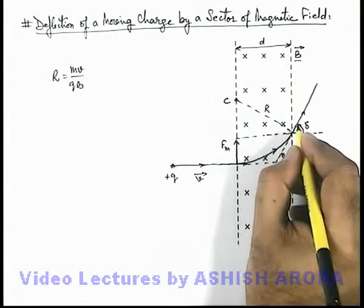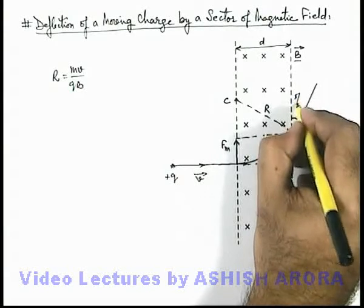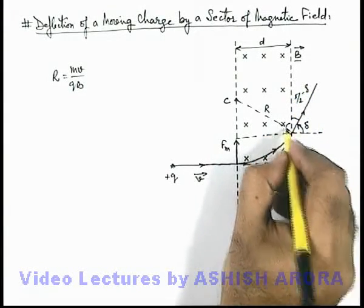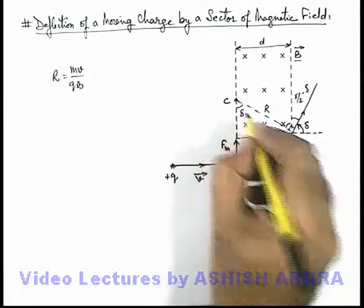Like in this situation if this angle is delta, this will be π/2 minus delta. And hence this will also be delta because this angle is 90 degrees, so this will be the deviation angle delta.